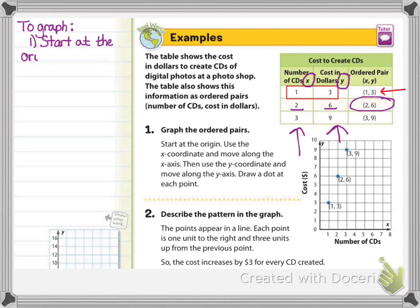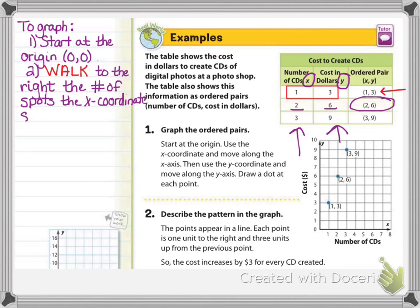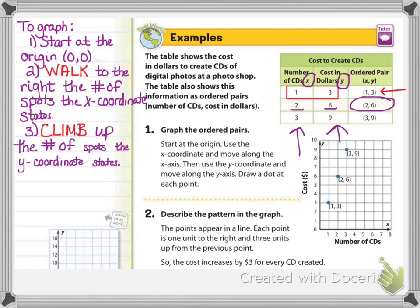So off to the side, let's go ahead and just put how to graph. So number one, you're going to start at the origin, which is the ordered pair (0, 0). Number two, you're going to walk to the right the number of spots that the x-coordinate tells you to, or that it states. And then, of course, step three is you're going to climb up the number of spots the y-coordinate states. And then you're going to put your dot there. So it's really not too bad.